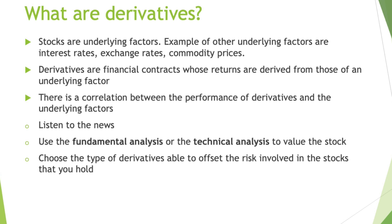So see stocks as an underlying factor. Stocks are underlying factors. Examples of other underlying factors that we have are interest rate, exchange rate, and commodity prices. So derivatives are financial contracts whose returns are derived from those underlying factors.